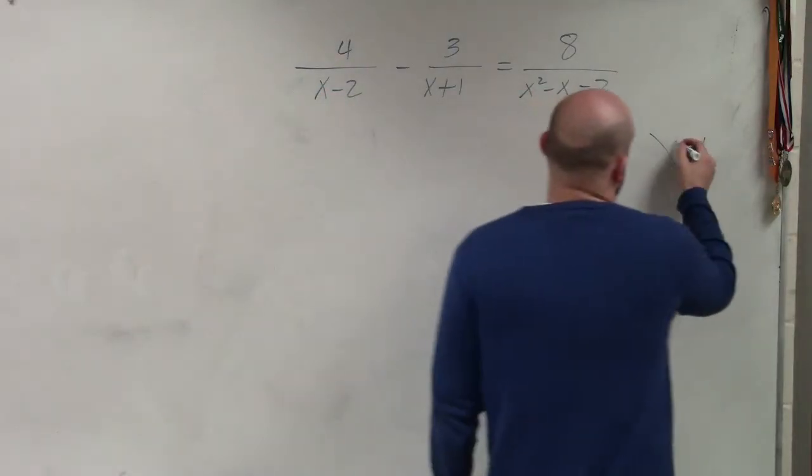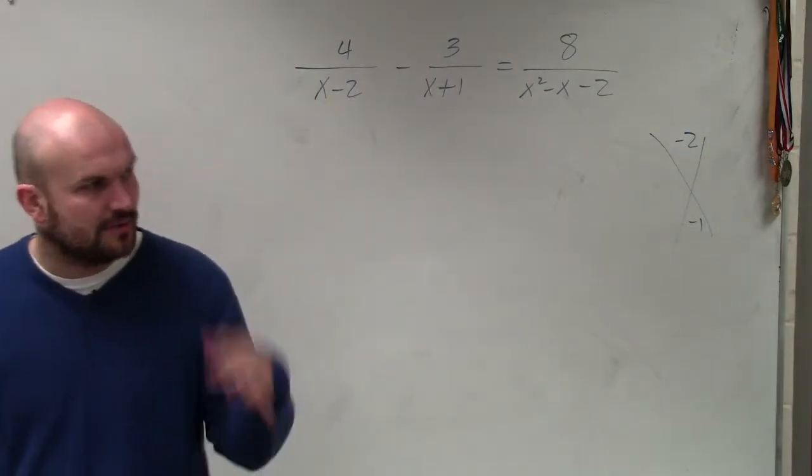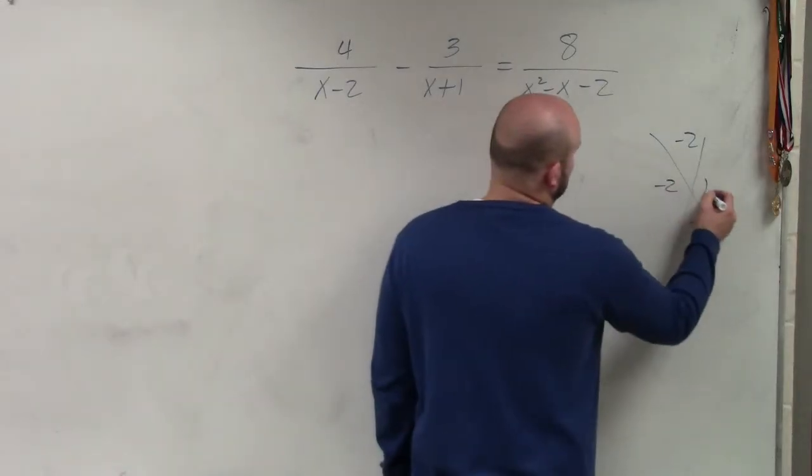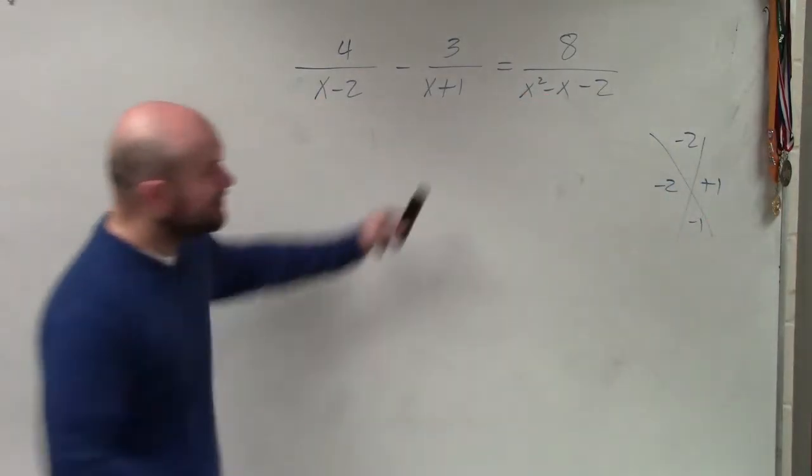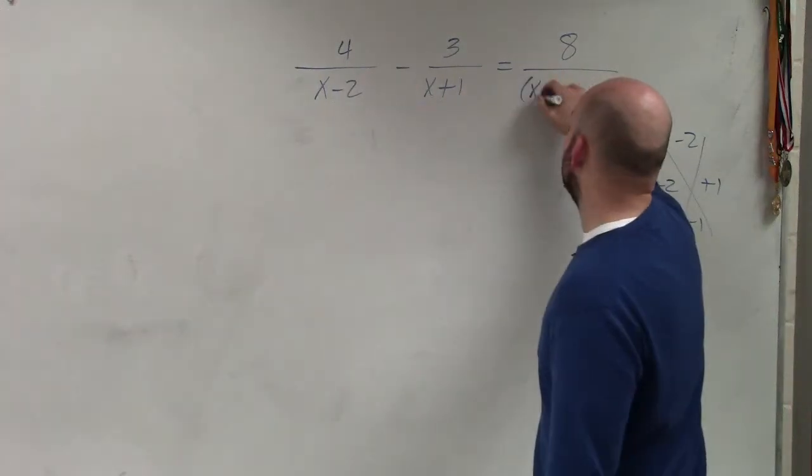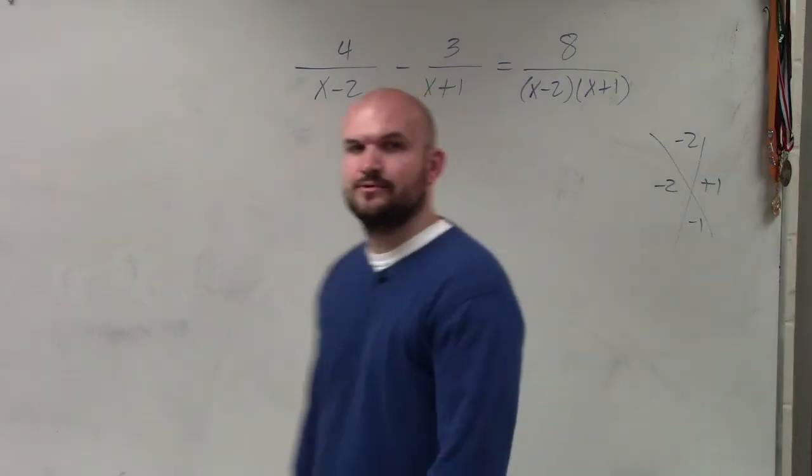Basically, what I'll do is I put negative 2 up here and negative 1. I want to determine what two numbers multiply to give me negative 2, add to give me negative 1. You guys can see the factors are going to be negative 2 and positive 1. So I'm going to rewrite this in factored form as x minus 2 times x plus 1. Does everybody see what I did? I just factored it.